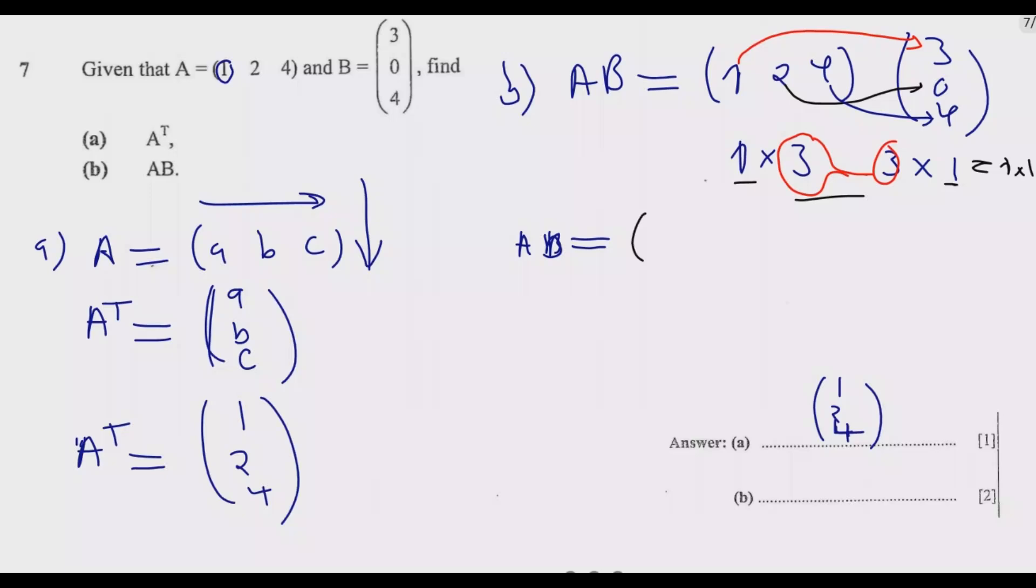So let us start now simplifying. So we have 1 times 3 plus 2 times 0 plus 4 times 4. So we are going to end up with 1 times 3 is 3, plus 2 times 0 is 0, then plus 4 times 4 is 16. You add that, you are going to end up with 19. So 19 is the answer. So this is how you answer this question to get those 3 marks.